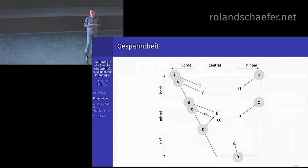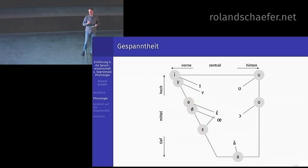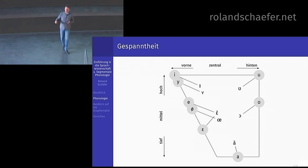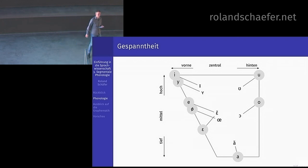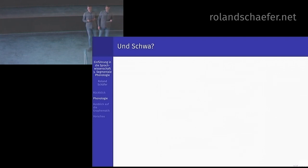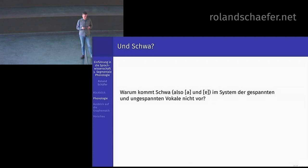Das Gleiche gilt für Ä und Ä — da müssen die Ungespannten mit einem Bogen markiert werden. Hinzu kommt: Ä ist die ungespannte Variante sowohl von E als auch von Ä. Das ist echt kompliziert, aber man kann es nicht mehr ändern. Was ist jetzt mit dem Schwa? Schwa haben wir jetzt gar nicht — Schwa kann nie betont werden, und das macht es besonders.